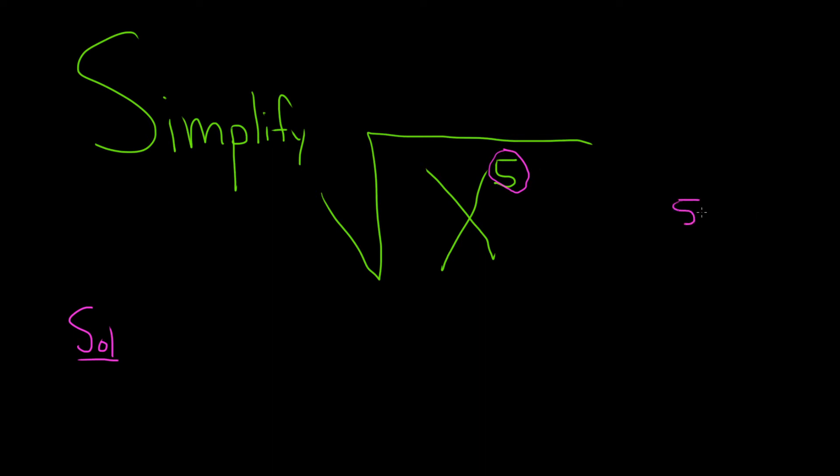Well 5 is equal to 4 plus 1. So 4 is going to be the largest perfect square we can get from the 5. And we can do it as follows. We can write this as the square root of x to the fourth times x to the 1.